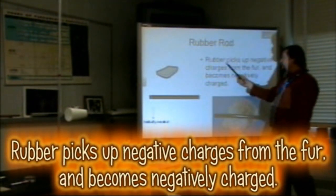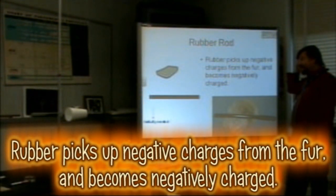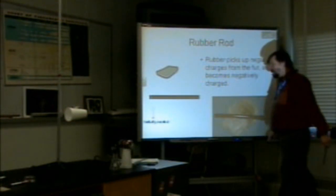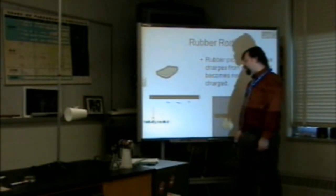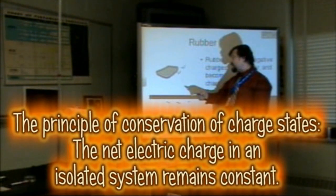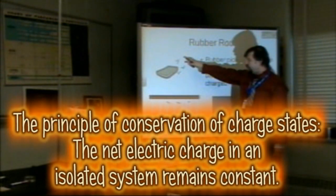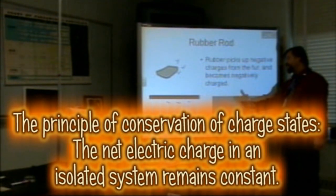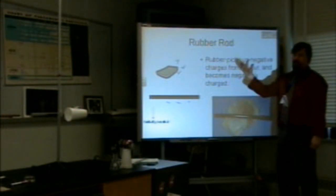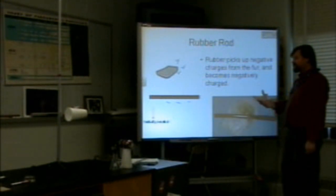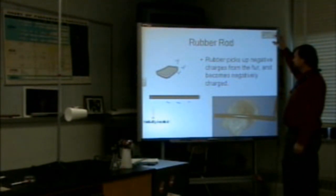Rubber rod with fur: the rubber rod picks up the negative charges from the fur and becomes negatively charged. We start with both initially neutral, and when you rub it with the fur, the rod picks up negative charges. By the conservation of charge, the fur must then have an overall positive charge — if it lost electrons, it has three more positive charges than it had before, since the neutral ones cancel each other out.